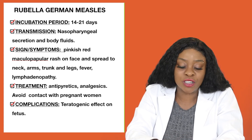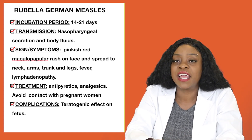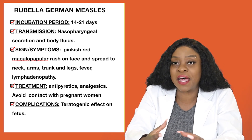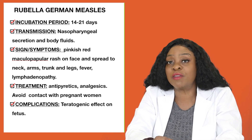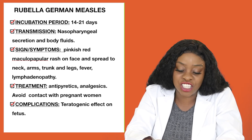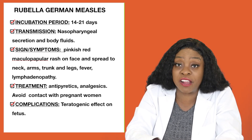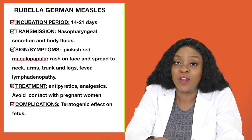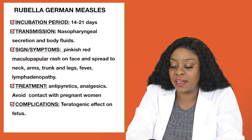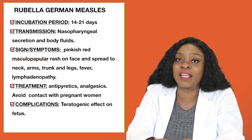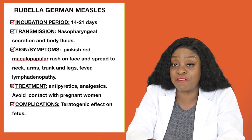With rubella in children, they tend to get a pinkish-red rash on the face that spreads downward to the neck, arms, trunk, and some children even to the legs. Many children will have a fever and lymphadenopathy, meaning the lymph glands are swollen. Treatment includes antipyretics for the fever and analgesics for the pain. We have to teach parents that the children must stay away from pregnant women while they have rubella. For the same reason, we do not give pregnant women rubella immunization, because rubella has teratogenic effects on the fetus.